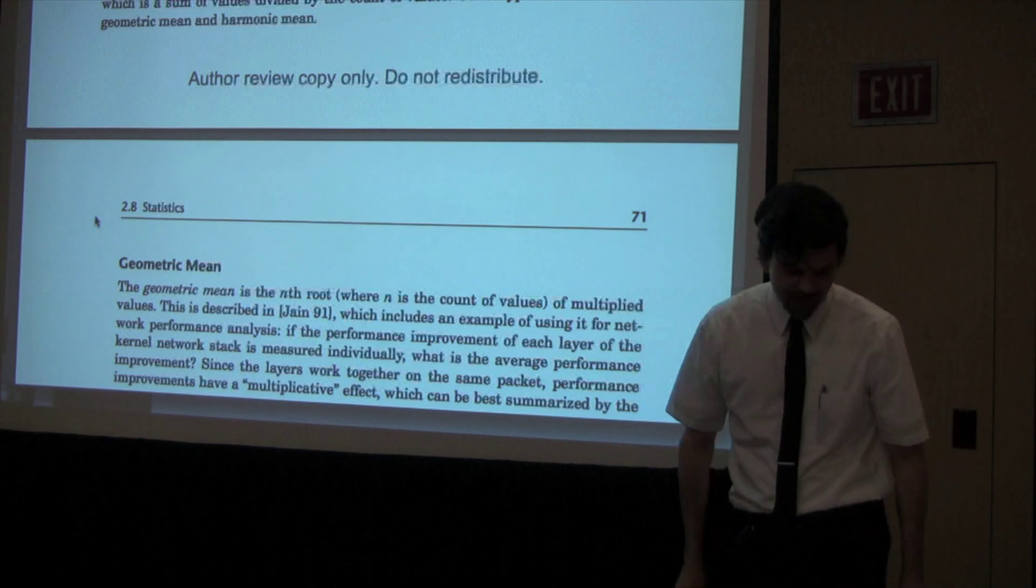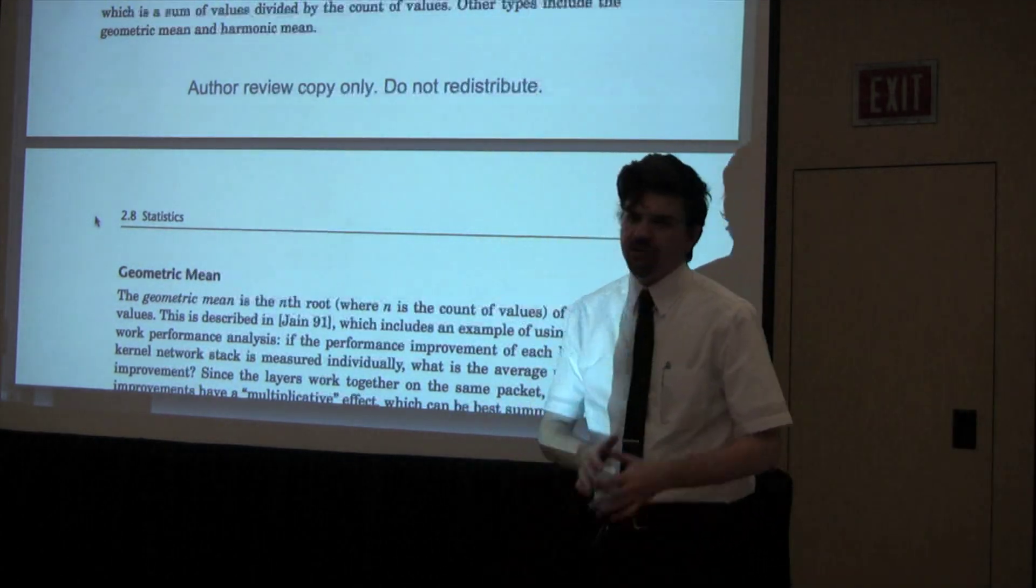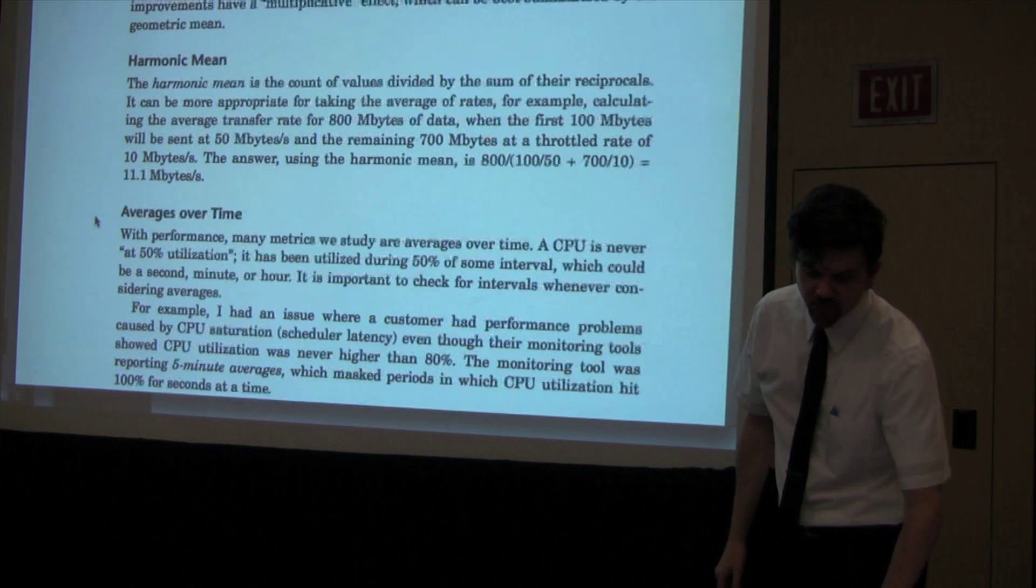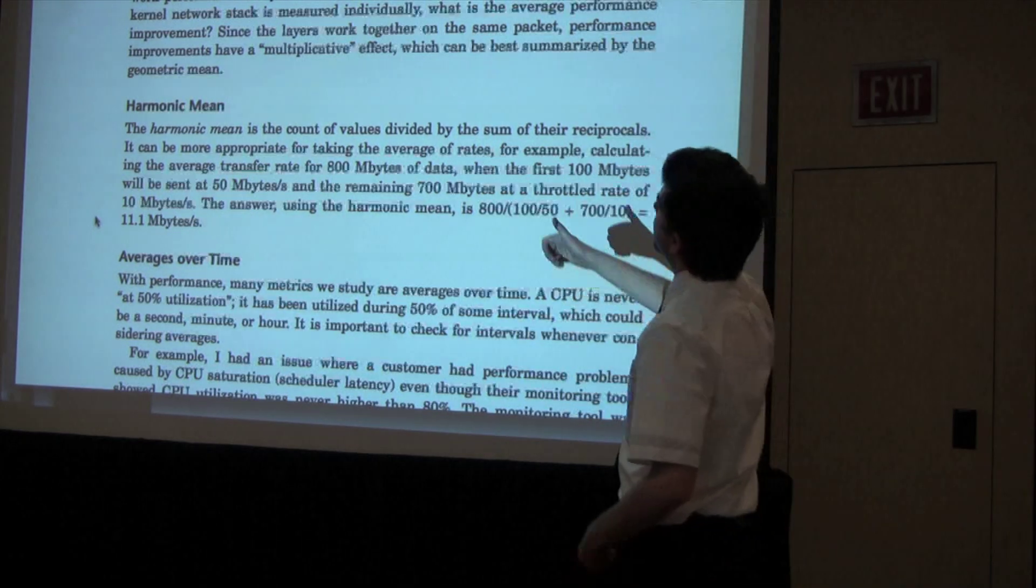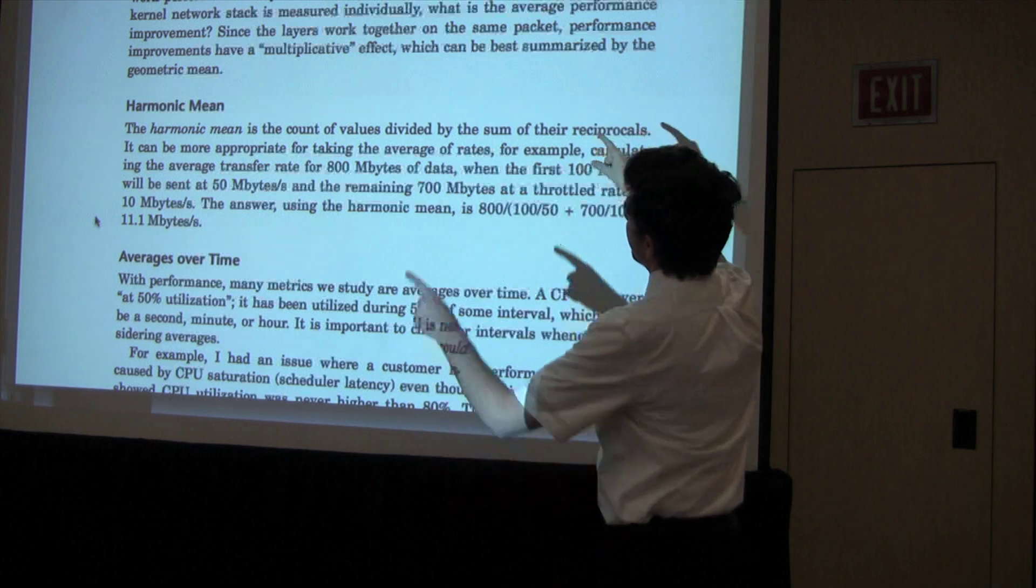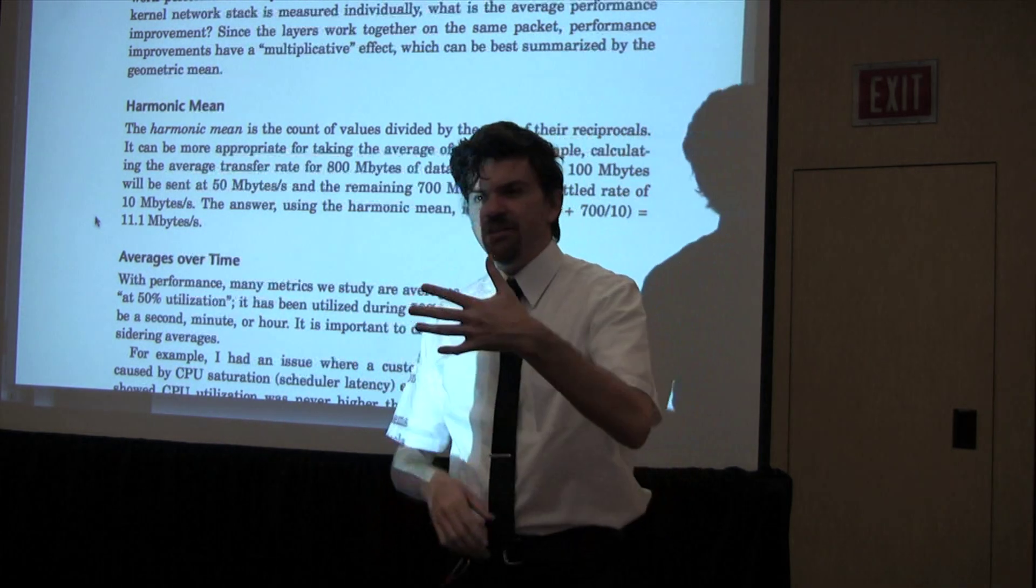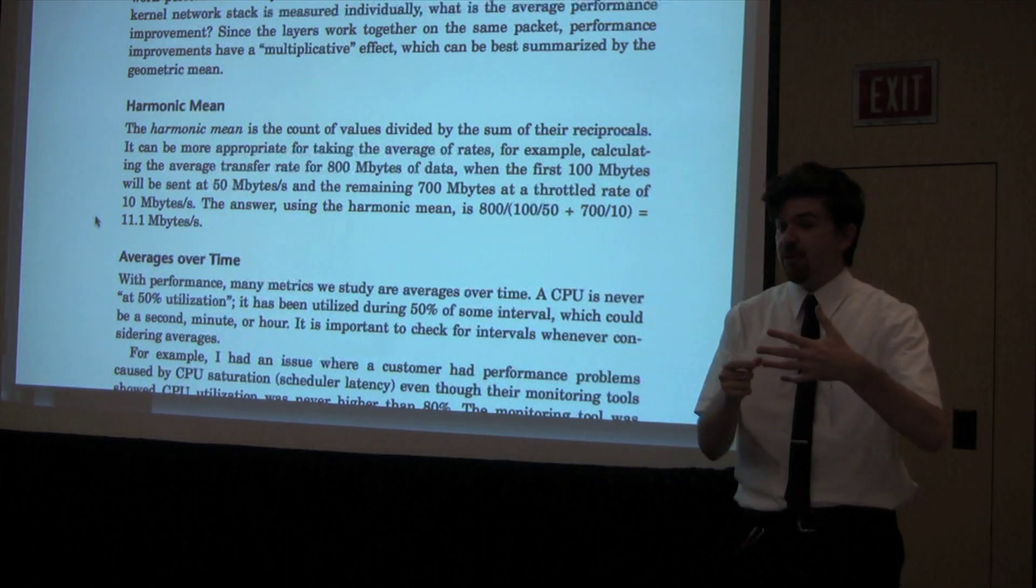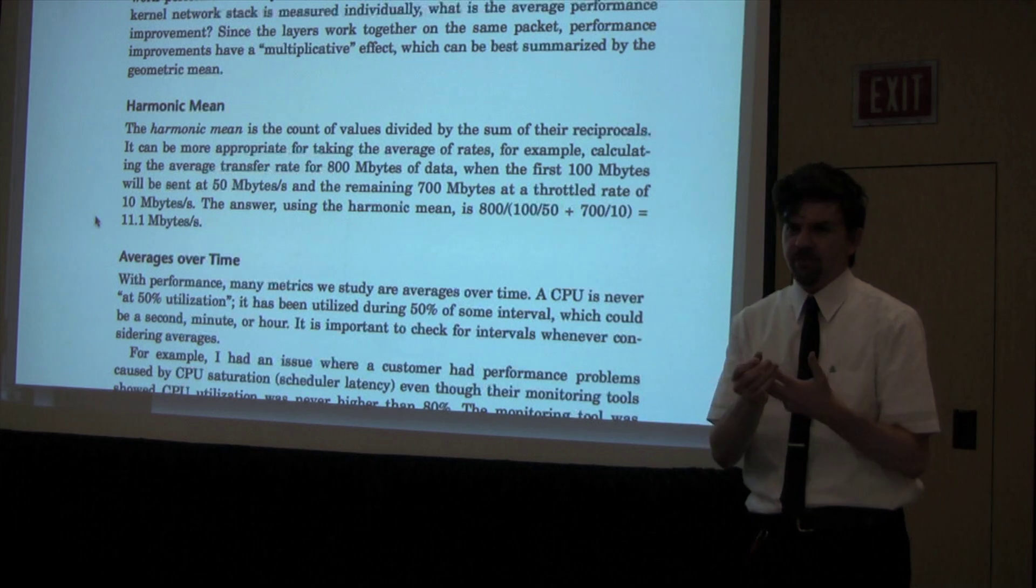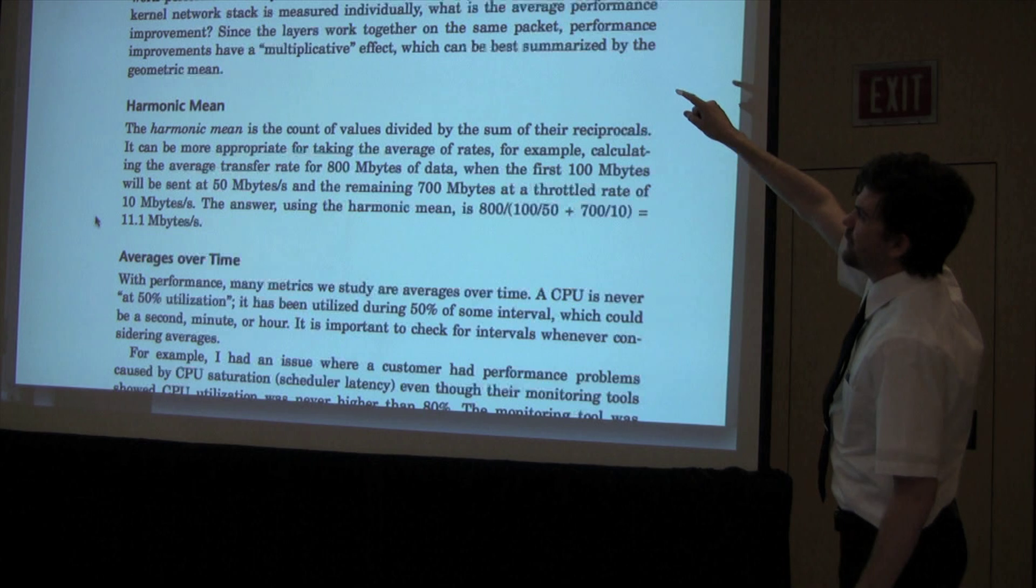The actual statistics part - averages. We commonly use arithmetic means, which is the sum of values divided by the count. There are various other means that might be useful to be aware of. There's the geometric mean, the nth root of multiplied values. The example is where, say I've got a TCP stack, engineers have told me the percentage of improvements of each layer, and you want to calculate what is the average improvement when they work in unison. That actually turns out to be more suitable for a geometric mean.